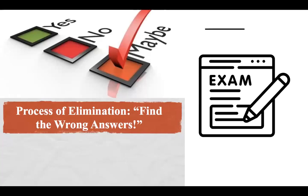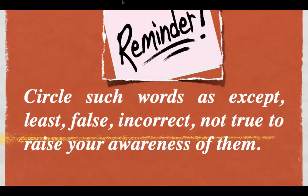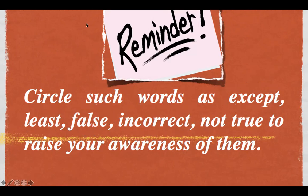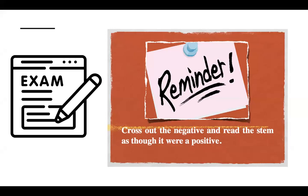Now, the process of elimination, or what I call P-O-E, find the wrong answers. Circle words such as, take note of this. So, these are the words you circle. Accept, least, false, incorrect, or not true. Why should you encircle these words? Because you need to be aware that they are part of the question. This is where the test-wise student does better than the student who doesn't have testmanship.